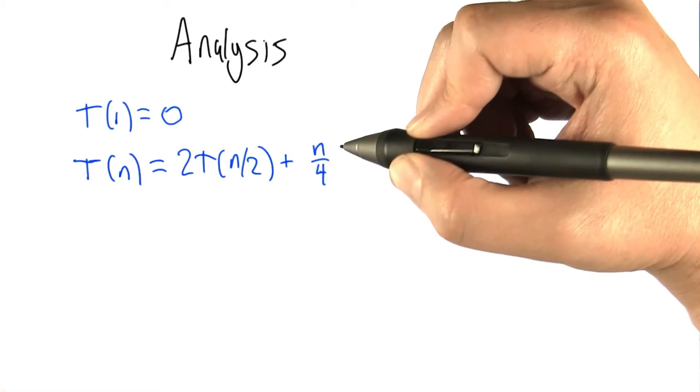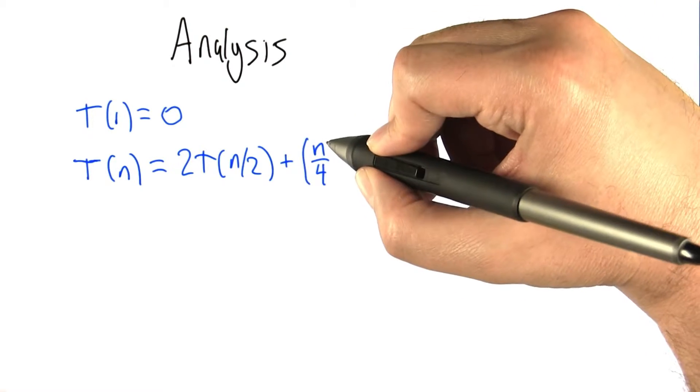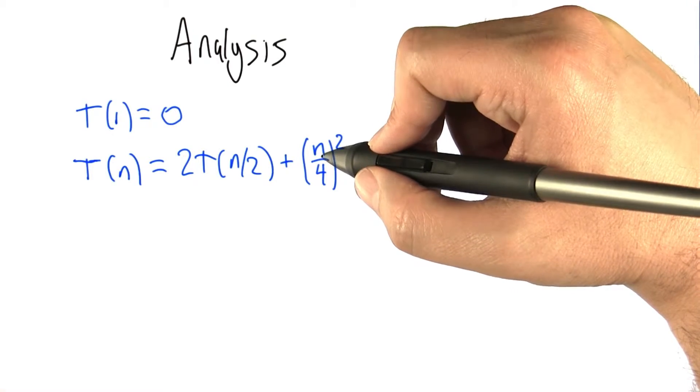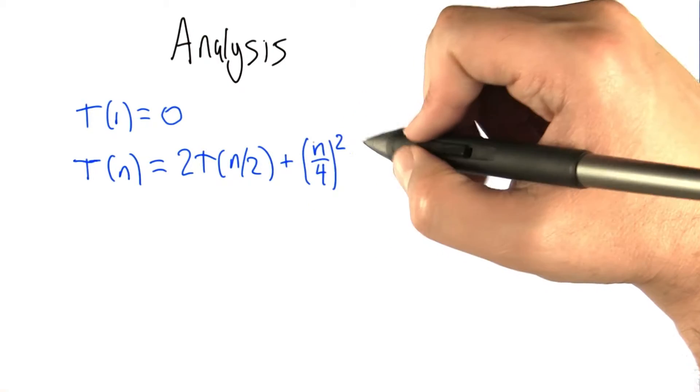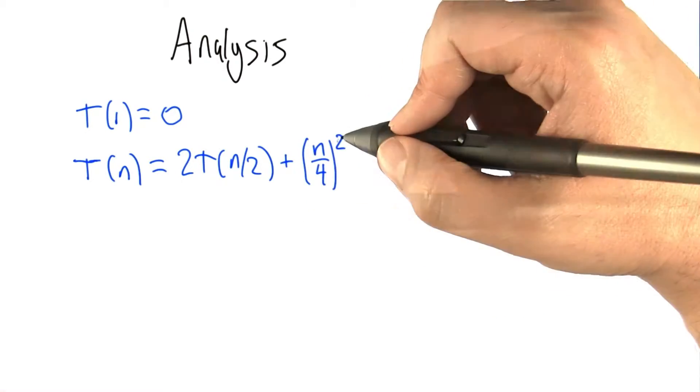Well, we're going to take n over 4 of the set of nodes and fully connect them with another set of n over 4 nodes. n over 4 from one side, n over 4 from the other. We're looking at all combinations of those.